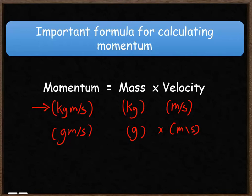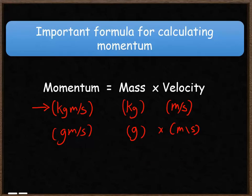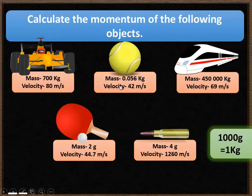Here are five objects. Calculate the momentum of each using the formula: momentum equals mass times velocity. There's a hint on how to convert grams to kilograms for two of them, where the mass is given in grams. Your answer should be in kilogram meters per second, so you'll need to convert those masses.